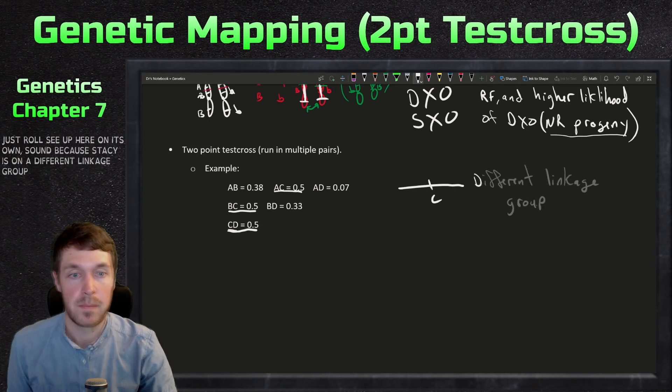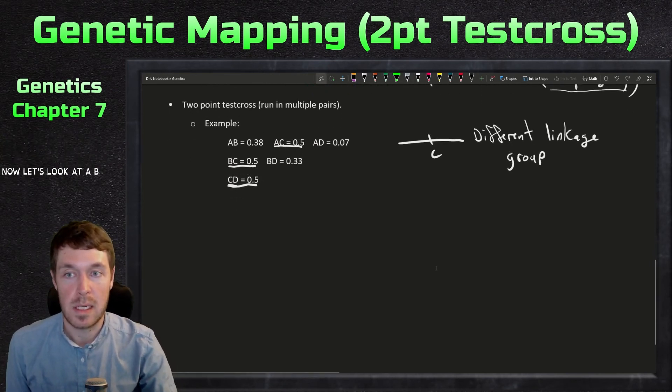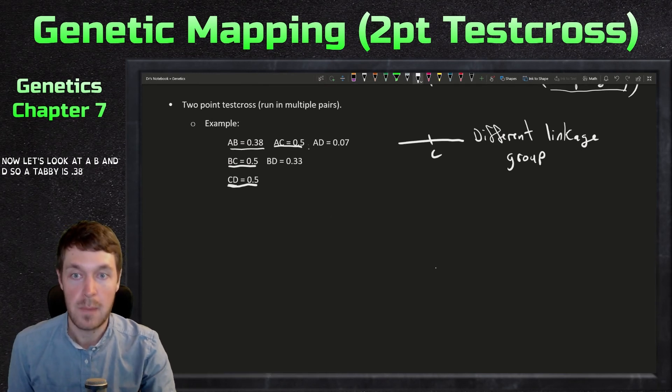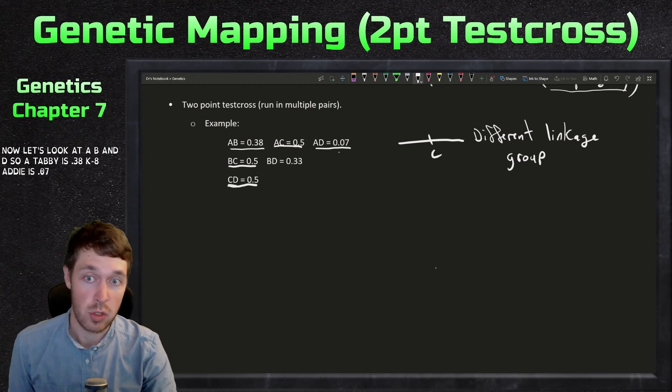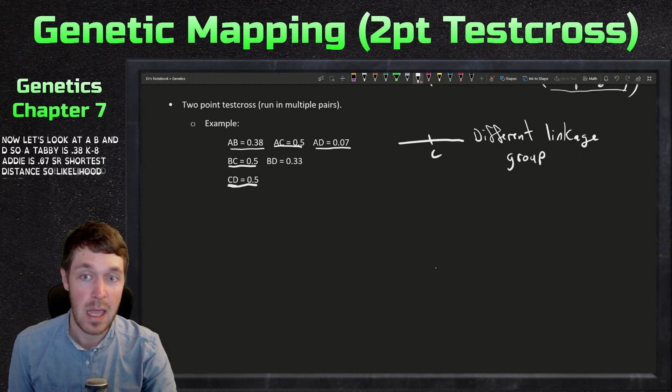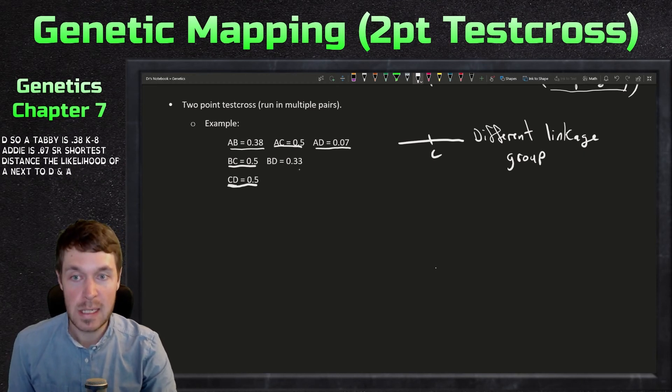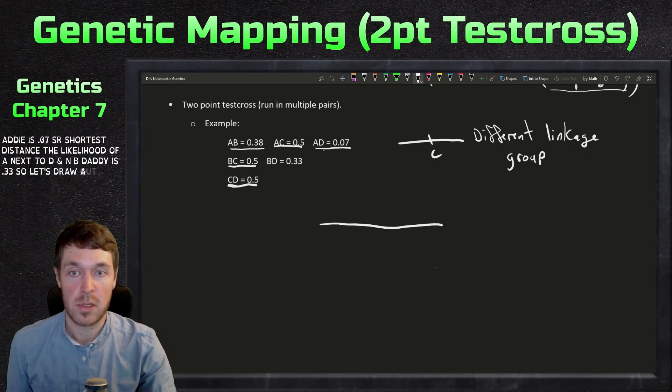Let's just draw C up here on its own chromosome, because let's just say C is on a different linkage group. Now let's look at A, B, and D. So A to B is 0.38. A to D is 0.07. That's our shortest distance. So likelihood of A next to D. And then B to D is 0.33.